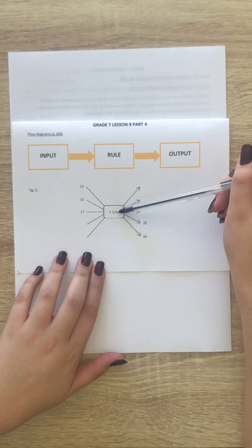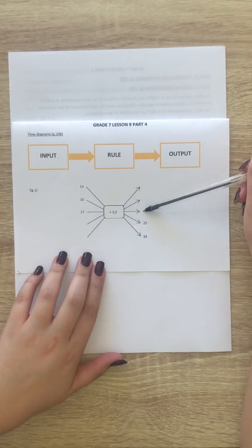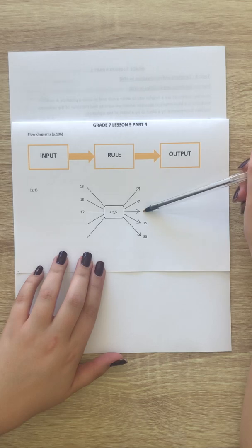My rule is plus 3.5. Then my output numbers, I need to find the first three. Then they give me 25 and 33.